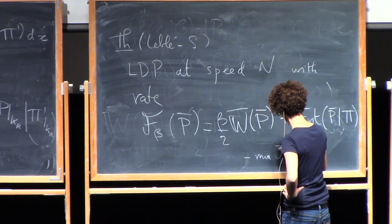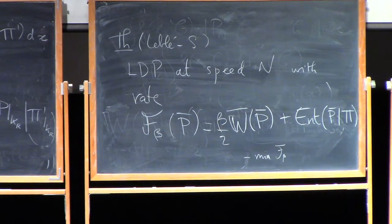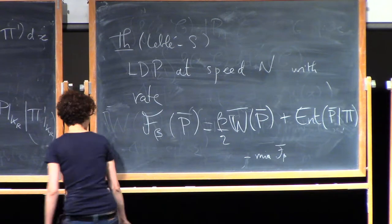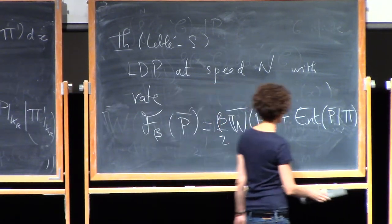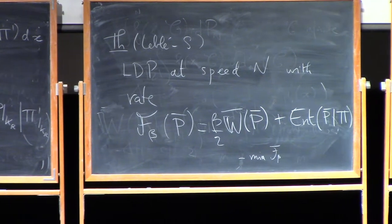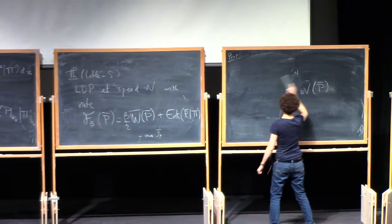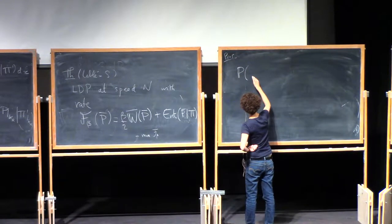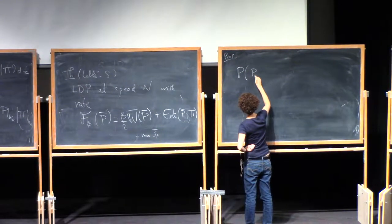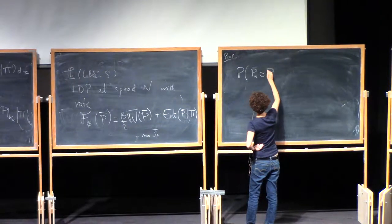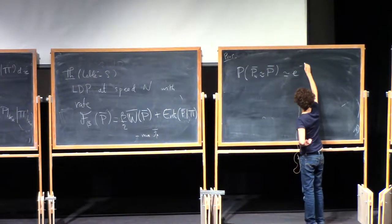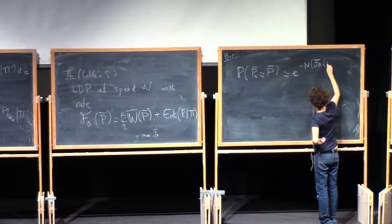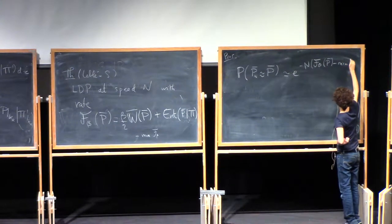Can you see with the lots of layers of chalk? The naive writing of the result is that the probability under the Gibbs measure that your empirical field looks like P_bar is decaying like exponential minus N times F_beta of P_bar minus the minimum of F_beta.